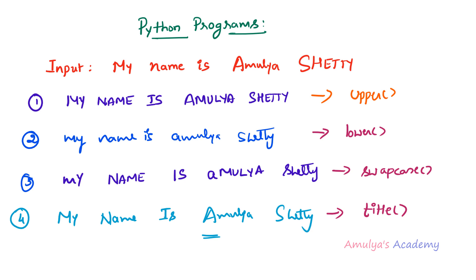All these methods return a new string — they won't change the original string, they will return a new string. So in this program we want to perform four operations: change the alphabets to uppercase, lowercase, swap the case, and change the first letter of each word to uppercase.